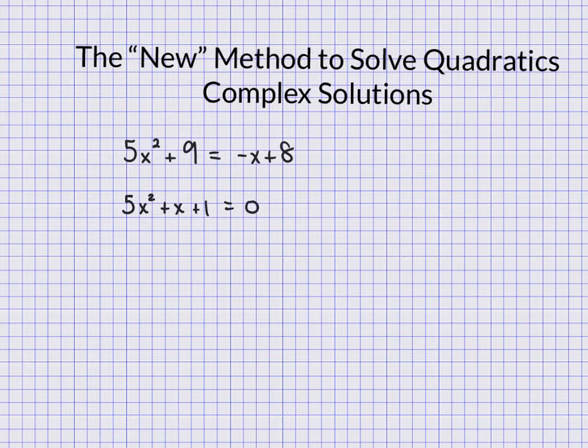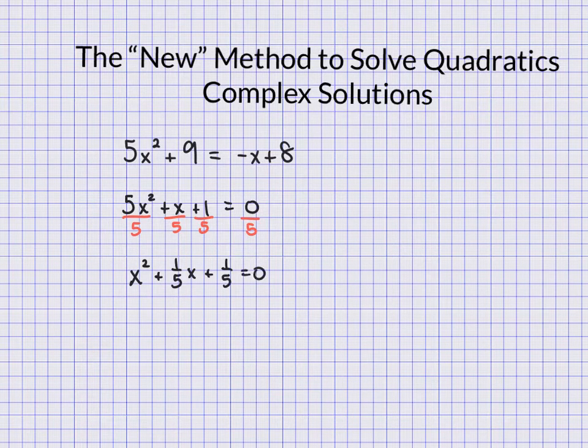Now we have standard form. The next thing we want is a to be 1, very similar to how we do this in completing the square. So we end up with some fractions here: x squared plus one-fifth x plus one-fifth is equal to 0.